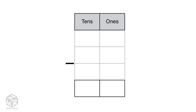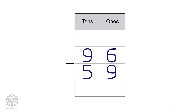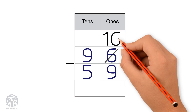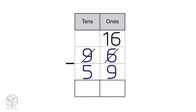Let's try another example: 96 minus 59. Pause this video and try to solve it on your own. We can't subtract 9 from 6, so we regroup one 10 as 10 1s. Now we have 16 1s and 8 10s. Subtract the 1s: 16 minus 9 equals 7.